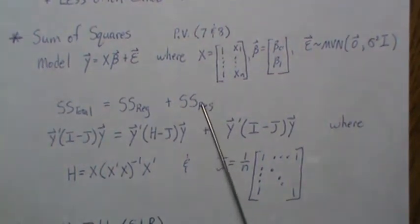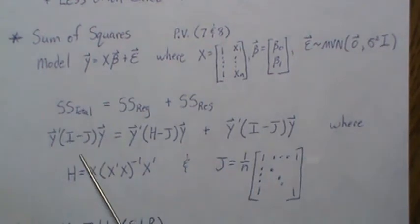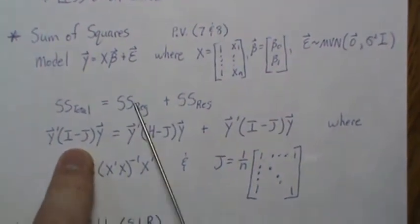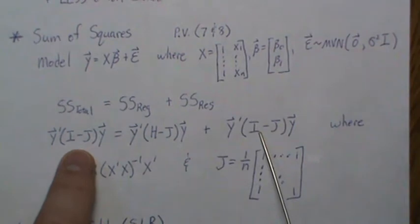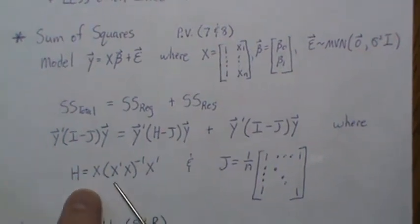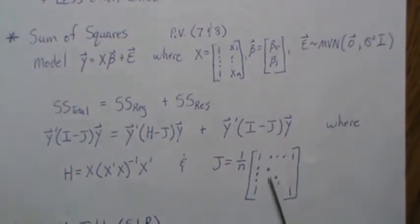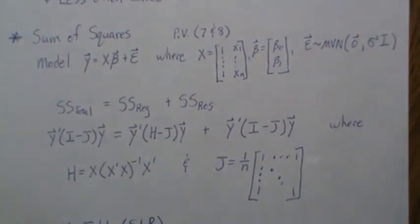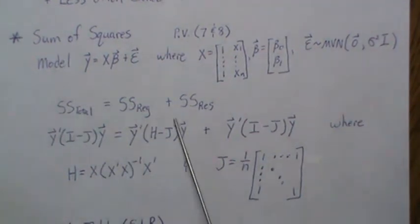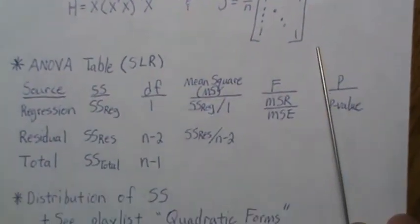The residual is sometimes called the error sum of squares. In matrix notation these are quadratic forms where H was the hat matrix and J was the n×n matrix of constants 1/n. These pieces of information go into the ANOVA table.